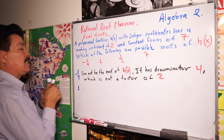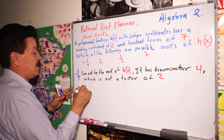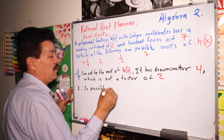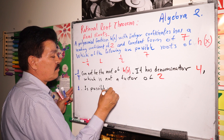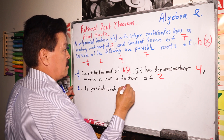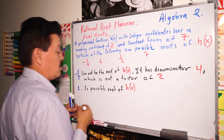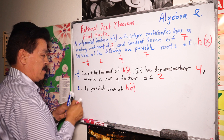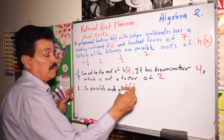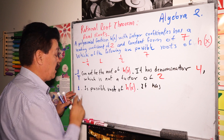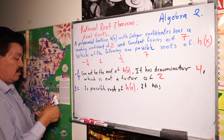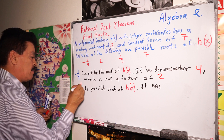Now let's look at the choice 1. This is a possible root of h(x). We can write 1 as 1 divided by 1 — it's the same thing.